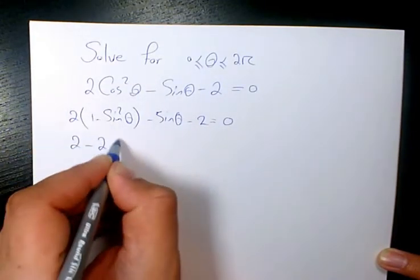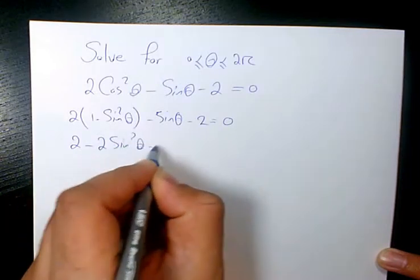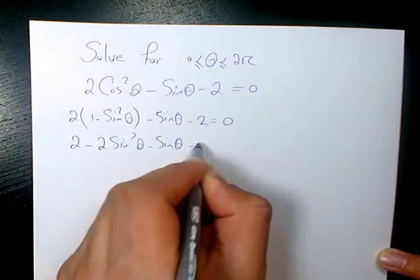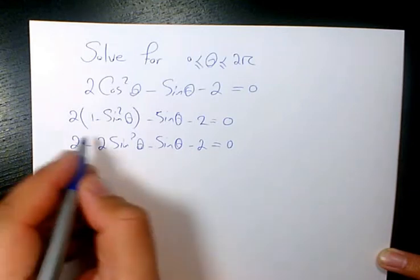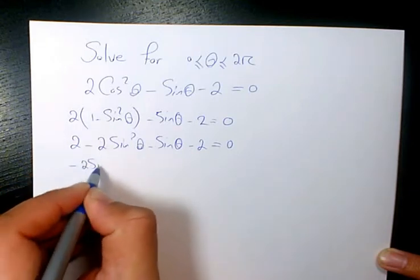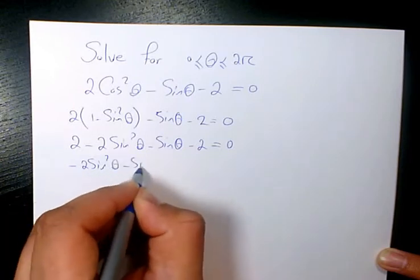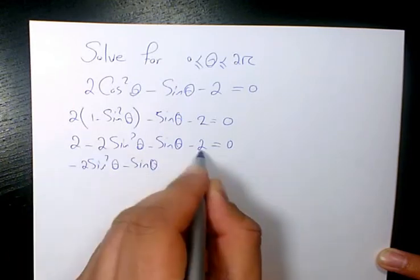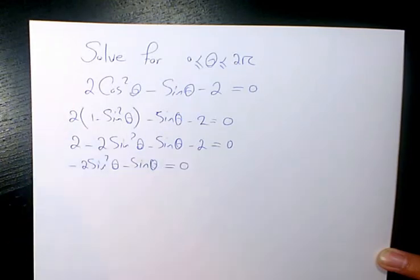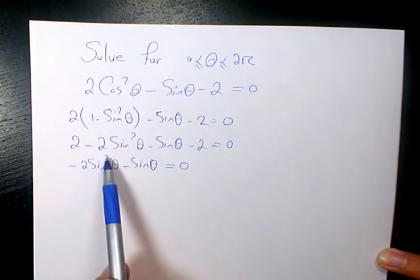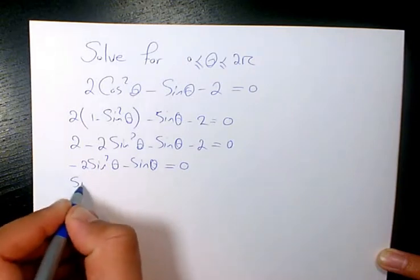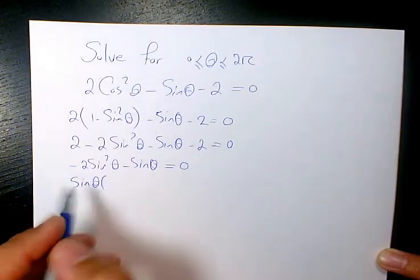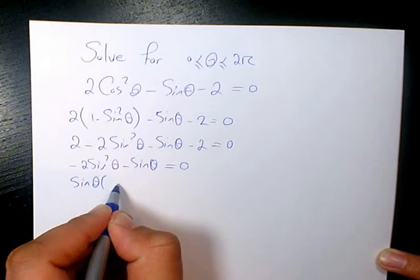Then I distribute it: 2 times 1 is 2 minus 2 sine squared theta minus sine theta minus 2 equals to zero. Then I rearrange it: negative 2 sine squared theta minus sine theta, 2 minus 2 will be zero. I need to factor sine theta, that will be sine theta times negative 2 sine theta minus 1 equals to zero.